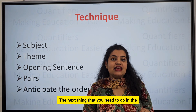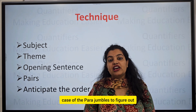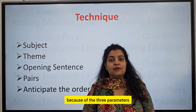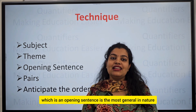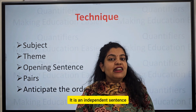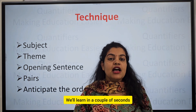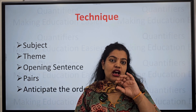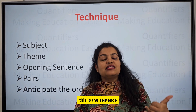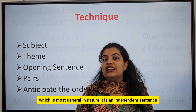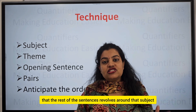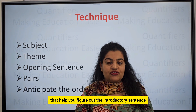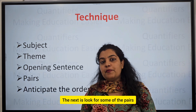The next thing you need to do in para jumbles is to figure out the opening sentence. The opening sentence is pretty obvious because of three parameters: it is the most general in nature, it is an independent sentence, and the rest of the sentences revolve around its subject. These three things help you figure out the introductory sentence.